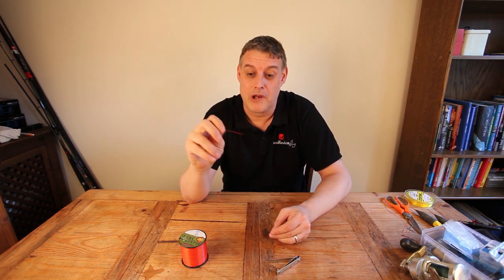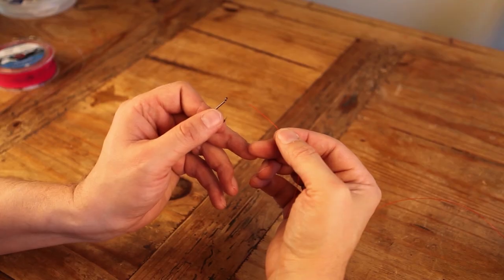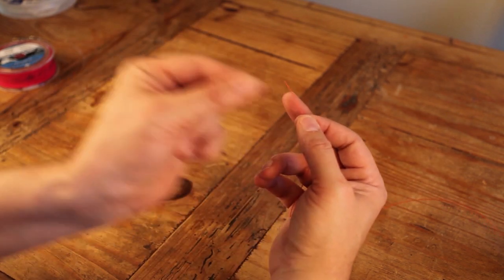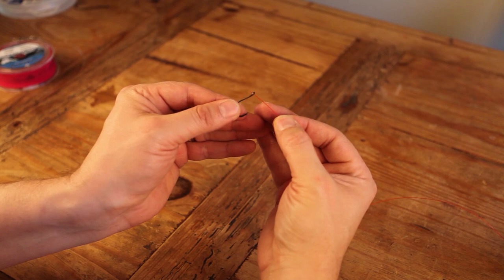So this is your leader knot, your leader line coming down from your rod tip. What you want to do is thread your hook on so that the point is pointing up towards your rod tip.